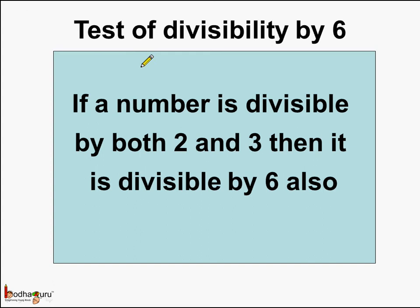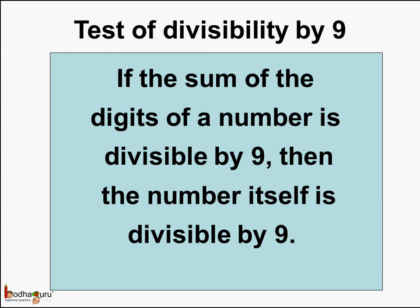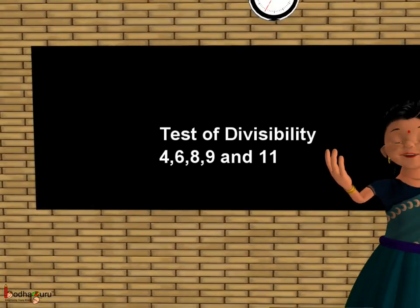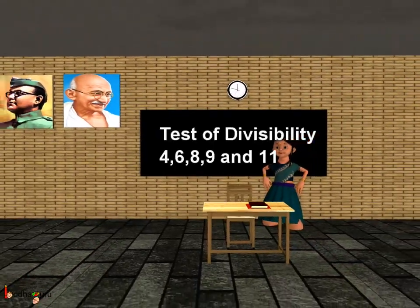To summarize: to test divisibility by 6, if a number is divisible by both 2 and 3, then it is also divisible by 6. For 9, if the sum of digits of a number is divisible by 9, then the number itself is divisible by 9. For 4, a number with 3 or more digits is divisible by 4 if the number formed by its last two digits is divisible by 4. So that was all about divisibility. Bye-bye children.